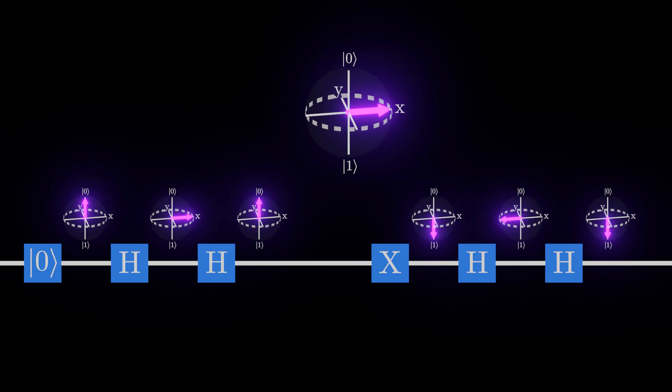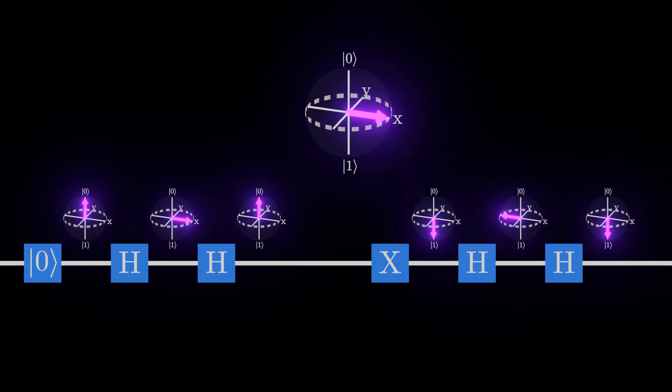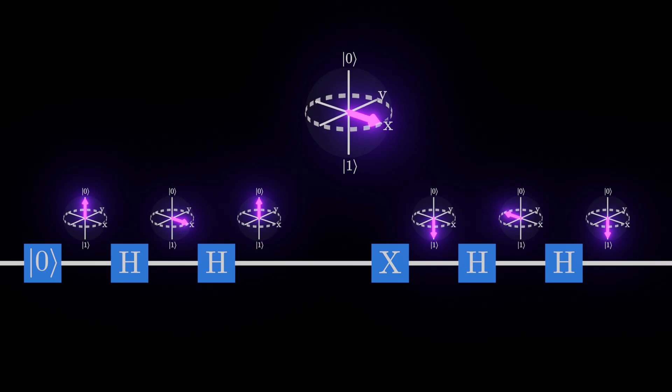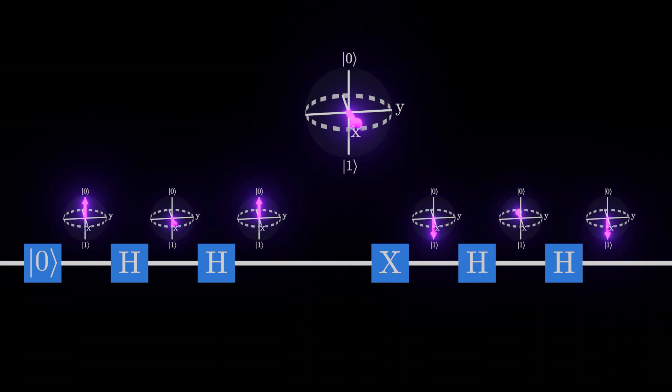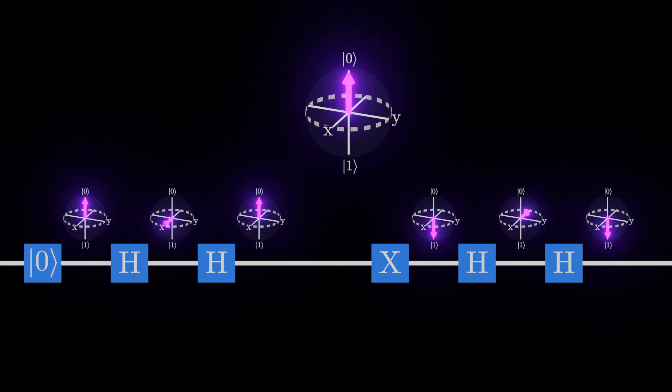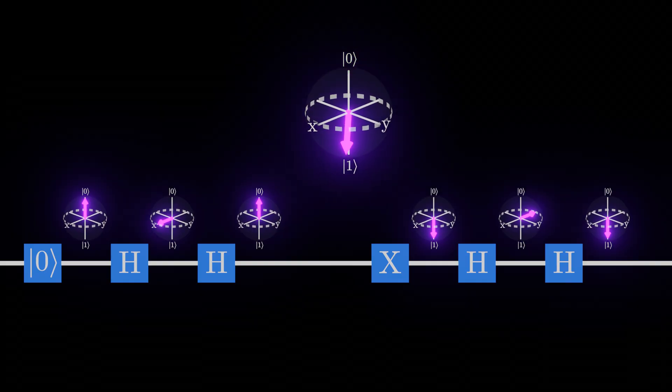We need to find a way to expand our model to account for this extra information. Specifically, we need to find a representation which allows for many different halfway states, while still only allowing for a single always 0 state and a single always 1 state.